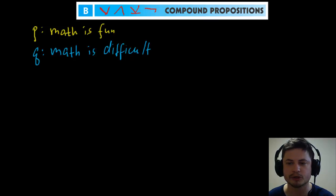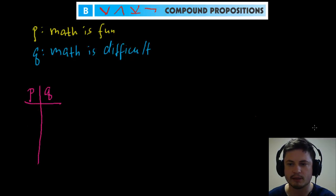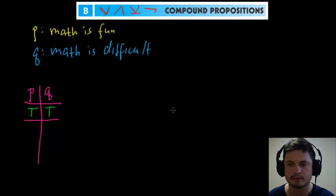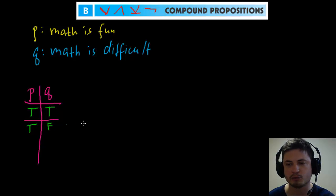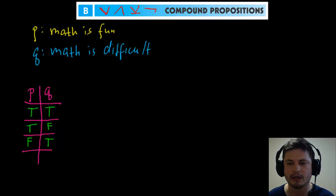Let's make a table to represent all possibilities for these two propositions. We have p here and q here. The possibilities are: p true and q true (math is fun and difficult), p true and q false (math is fun but not difficult), p false and q true (math is not fun but difficult), and p false and q false (math is not fun and not difficult).